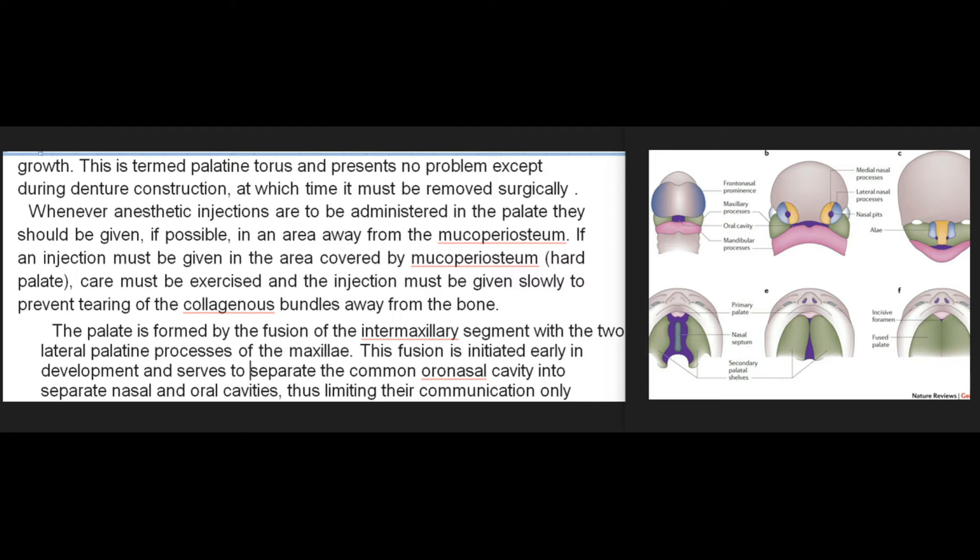Whenever anesthetic injections are to be administered in the palate, they should be given, if possible, in an area away from the mucoperiosteum. If an injection must be given in the area covered by mucoperiosteum (hard palate), care must be exercised and the injection must be given slowly to prevent tearing of the collagenous bundles away from the bone. The palate is formed by the fusion of the intermaxillary segment with the two lateral palatine processes of the maxilla.